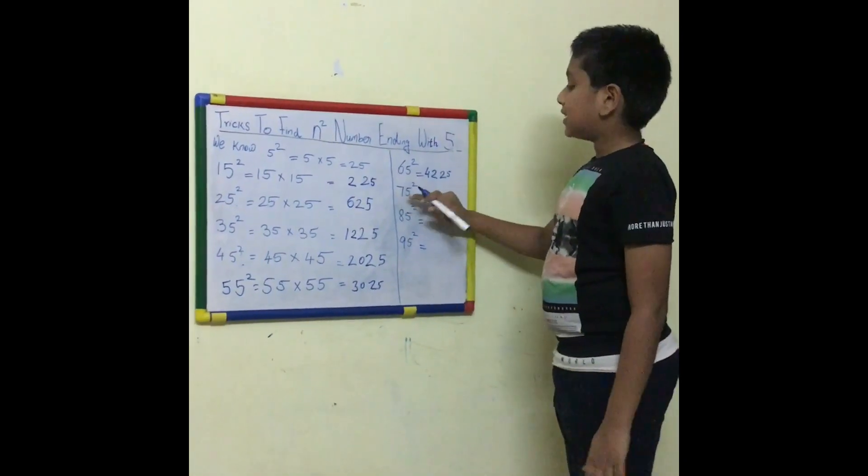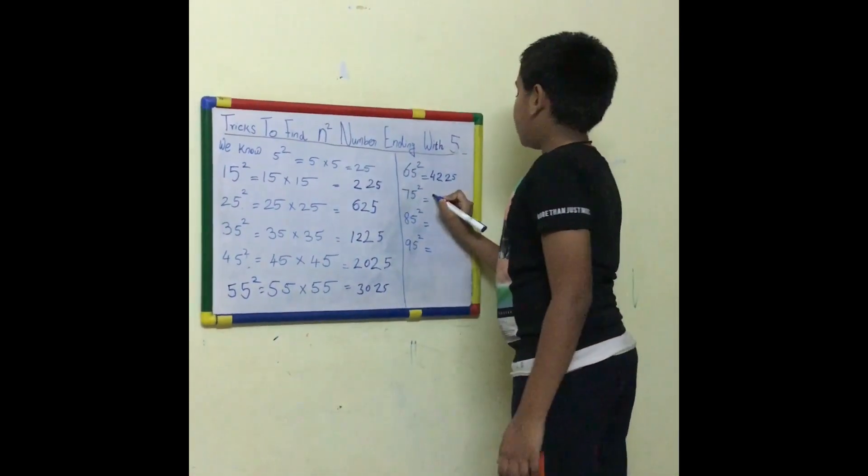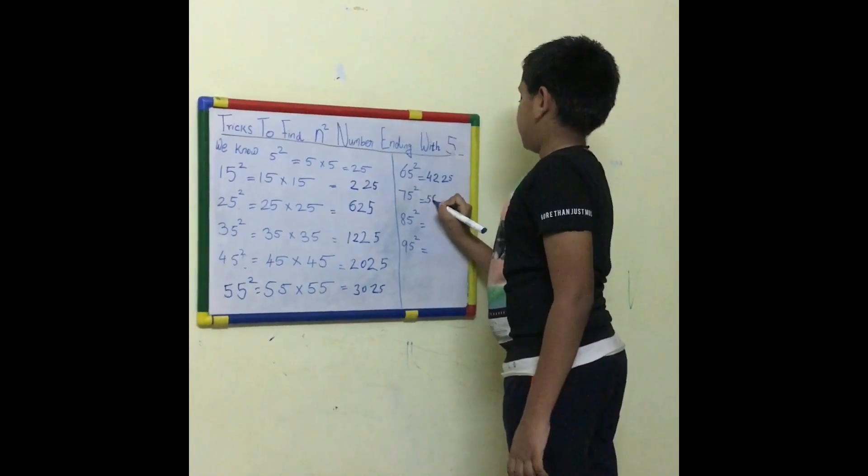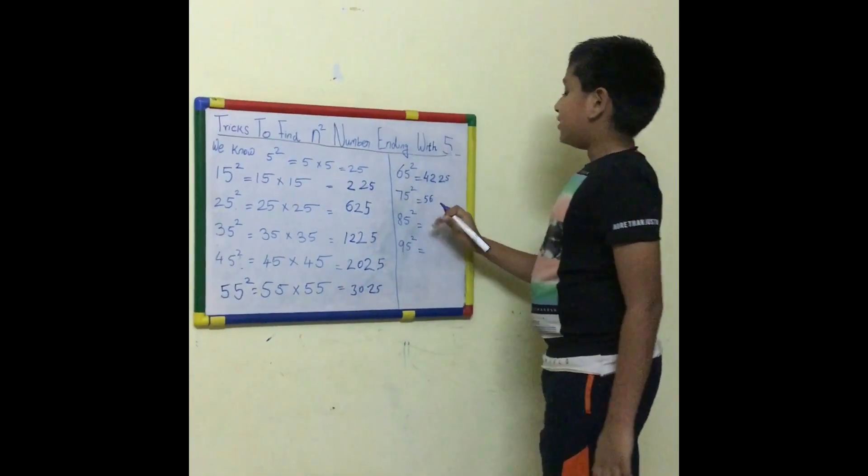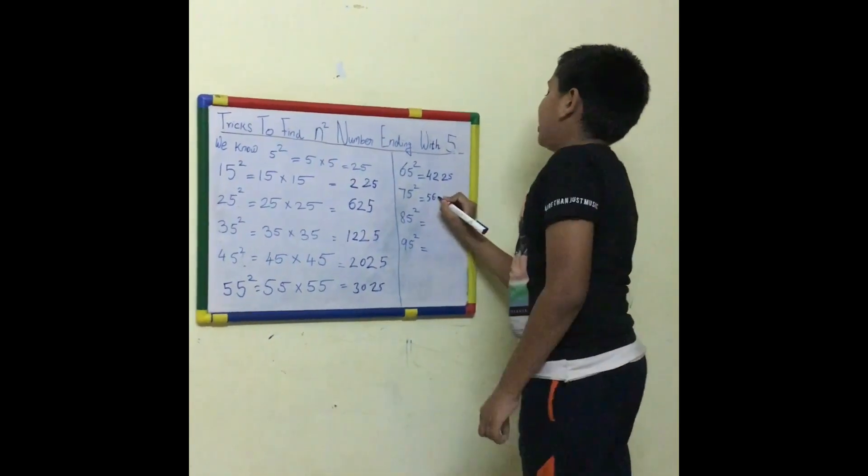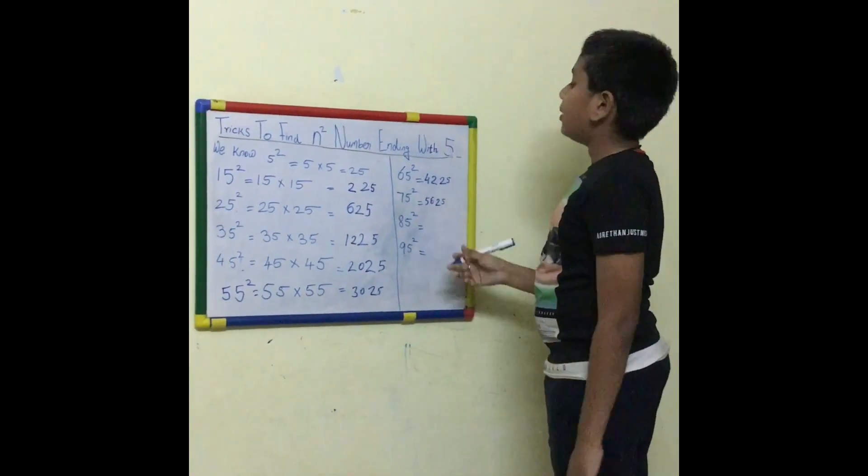75 squared. 7's successor is 8. So 7 into 8 is 56. So 5 into 5 is 25. The answer is 5625.